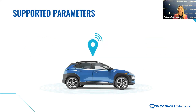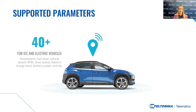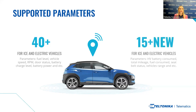Now let's talk about FMX 150 supported CAN parameters. In total, we support more than 40 available parameters depending on the make and model of the vehicle. Some of the most commonly available include fuel level, vehicle speed, RPM and engine status. Recently, we added 15 new parameters for ICE and electric vehicles, such as high-power battery consumed, total mileage, fuel consumed and vehicle range. We highly recommend updating the FMX 150 firmware to the newest version to experience all the advantages.